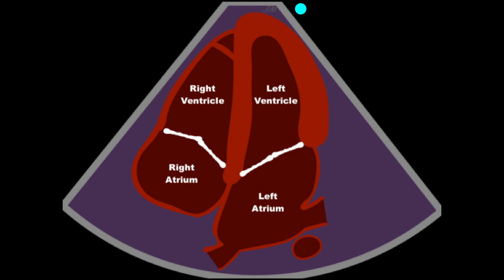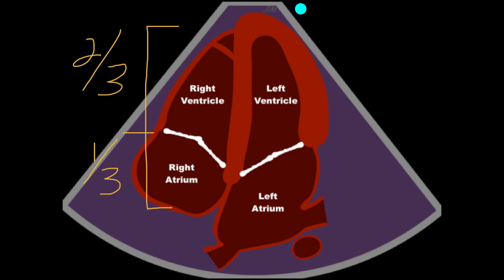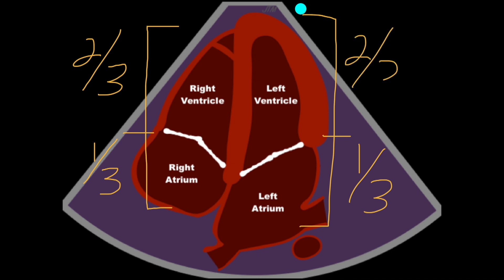Our last rule of thirds has to do with the length of the heart. We're going to break that up into the atrium and the ventricles. The atria should be about a third compared to two-thirds of the whole for the ventricle. Any difference from that is concerning for enlargement. When we look at the left ventricle, same thing — it should be about a third compared to two-thirds of the left ventricle, the entire length of the heart in the apical view.